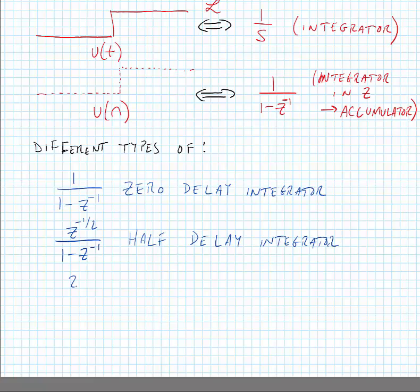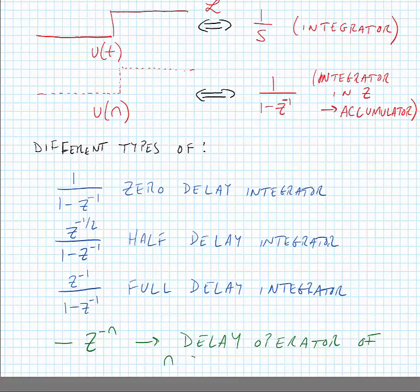And we can make a full delay as well, z to the minus one over one minus z to the minus one. So what we see is z to the minus n is a delay operator of n samples. And this is similar to differentiation in the continuous time domain. So we won't be using Z-transforms for a few days now, but I just wanted to make sure that we have the tools to start to use them as we move forward in the class.